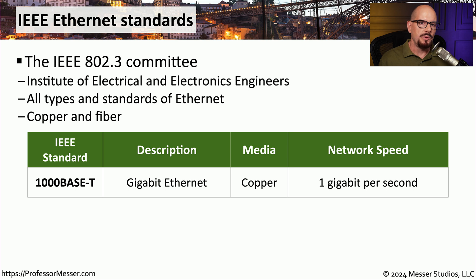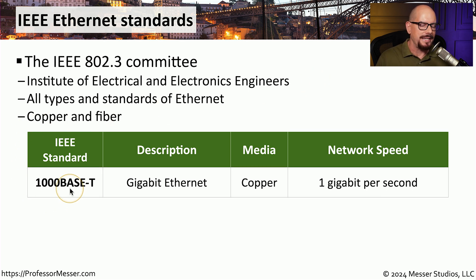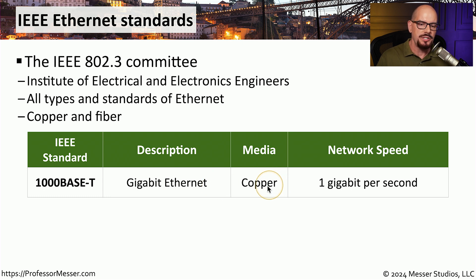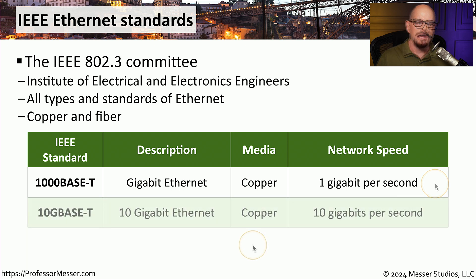For example, a very common ethernet network would be 1000BASE-T. This is a gigabit ethernet network that operates over twisted pair copper cabling and operates at a speed of 1 gigabit per second.